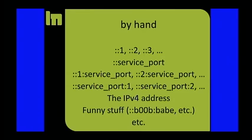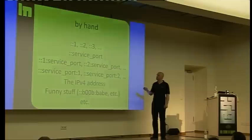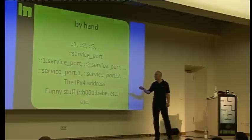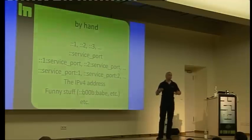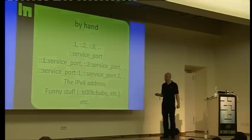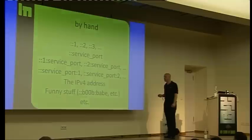By hand, what are people using there? You have something like 1, 2, 3, or very common is service port, like 80 for the web server, 53 for the DNS server. Or if they have more DNS servers, this would be 1 colon 53, 2 colon 53, and so on. Some use even the real IPv4 address. People who like to make some fun with poop babe, dead beef, whatsoever. But these are less common.